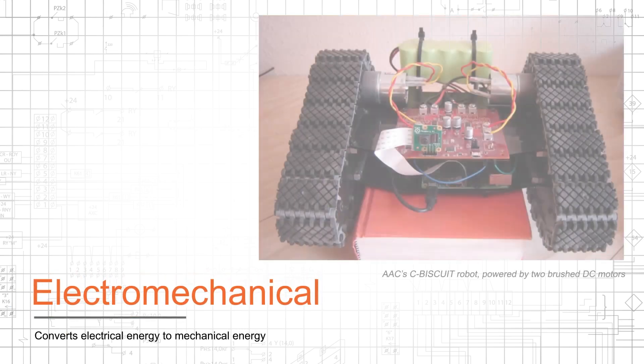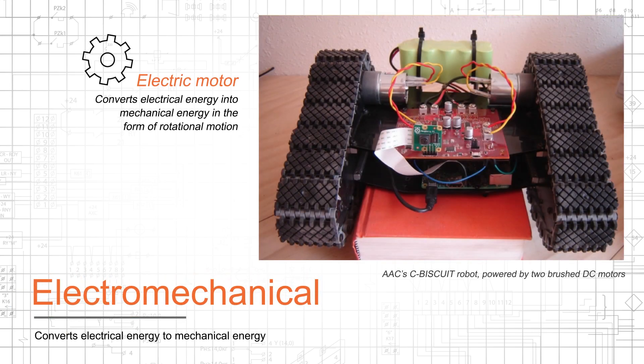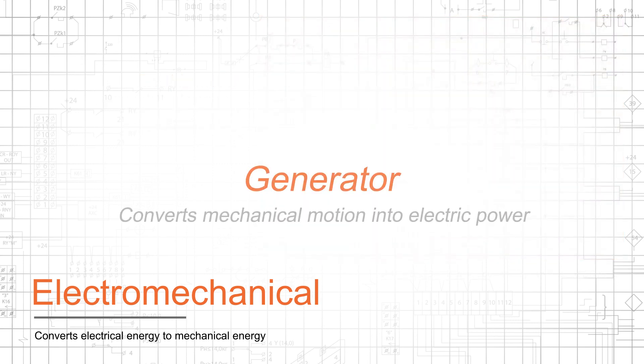The most familiar electromechanical component is the electric motor, and almost all motors convert electrical energy into mechanical energy in the form of rotational motion. A generator reverses this relationship, converting mechanical motion into electric power.